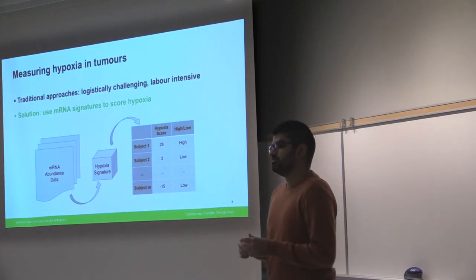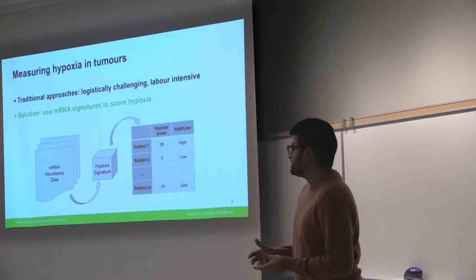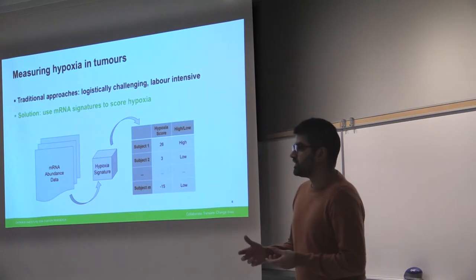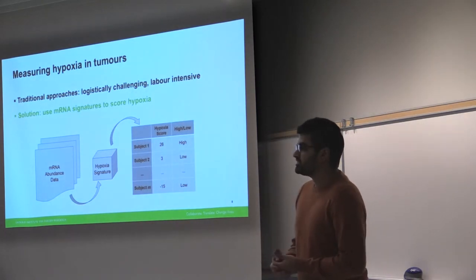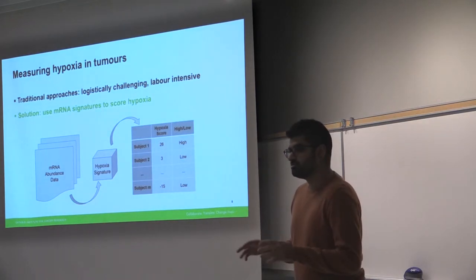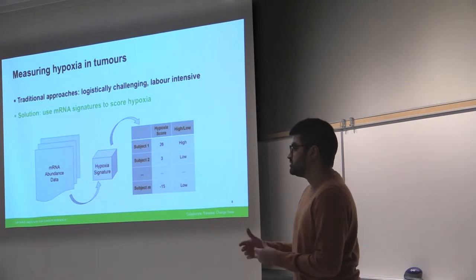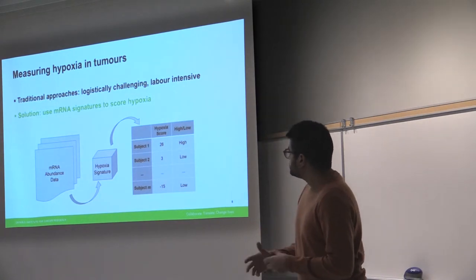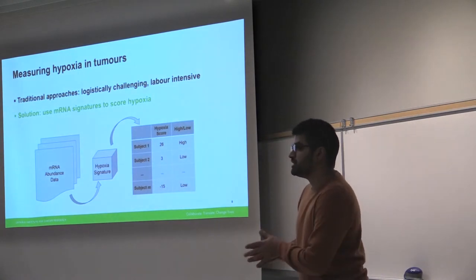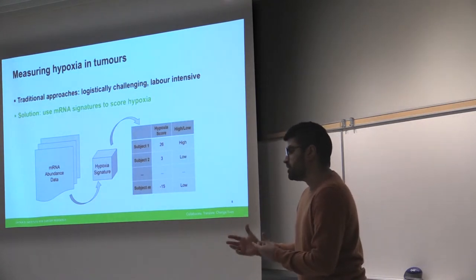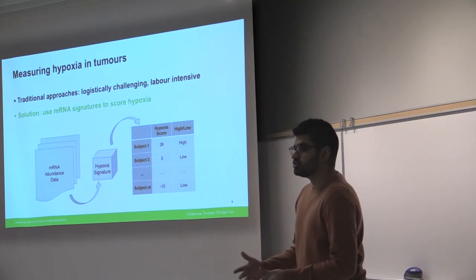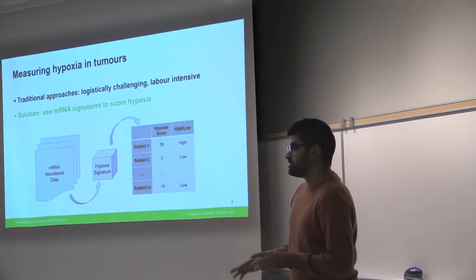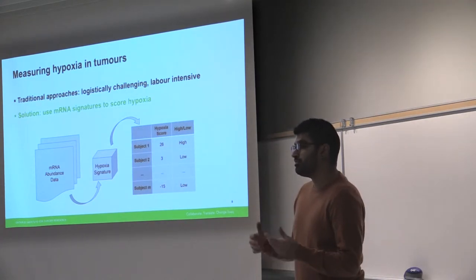Now, traditionally, the way we measure oxygen levels in cancer, they're very logistically challenging, and they require experts to do it, and they can be very labor-intensive. And this has limited research on hypoxia to be basically limited to tens of patients at a time, which makes it difficult to do a lot of clinical work. So our solution to this was to use mRNA signatures. So in our body, we have DNA, from that we make mRNA, and under low oxygen levels, the mRNA levels in our body actually change. And we can use those mRNA changes to figure out how hypoxic a cancer is.